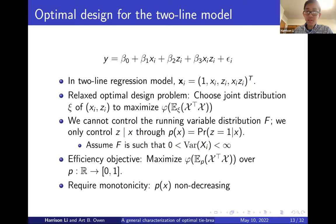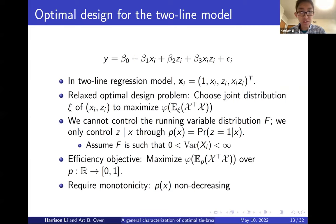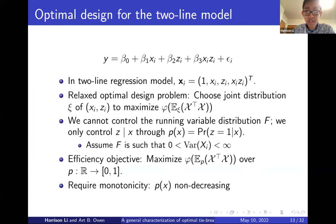Returning to our setting for the two-line model and tiebreaker: we have four covariates — 1, xi, zi, and xi times zi. The relaxed optimal design problem is to choose a joint distribution on xi and zi to maximize phi of the expected X transpose X. We cannot control the distribution of x — that's given to us — so the only control we have is the conditional distribution of z given x, through the design function p of x, defined as the probability of treatment given x.